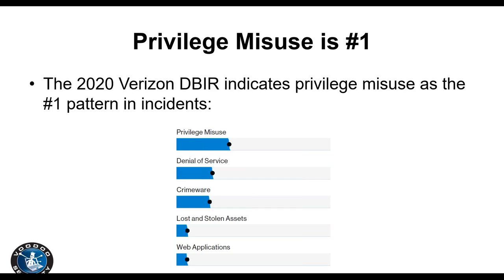Dave references the Verizon DBIR, noting that in the most recent report, Privileged Misuse is the number one pattern seen in incidents. While it's not always the top factor in breaches, there are vastly more incidents than breaches, making privileged misuse a factor across the board. This corroborates how difficult it has been to corral all the different types of access and access models.